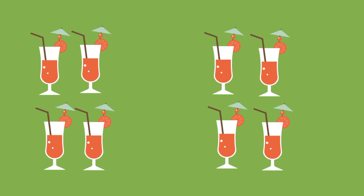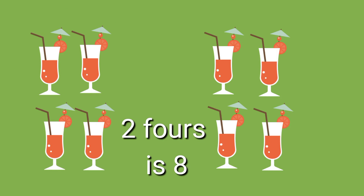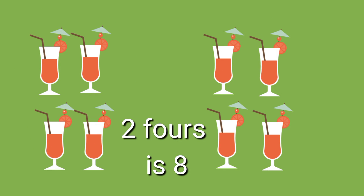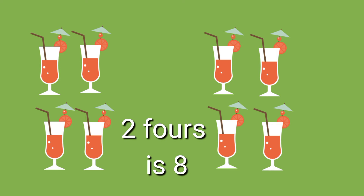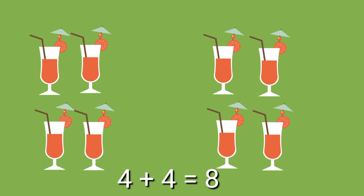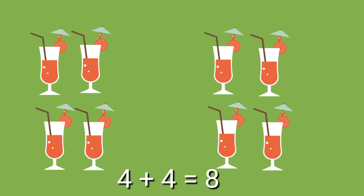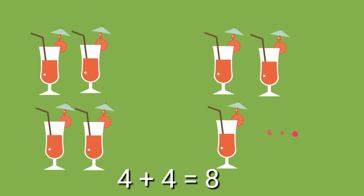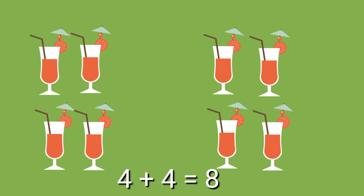You say two fours is equal to eight. You can add repeatedly to find the number of glasses of juice in all. Four plus four equals eight.